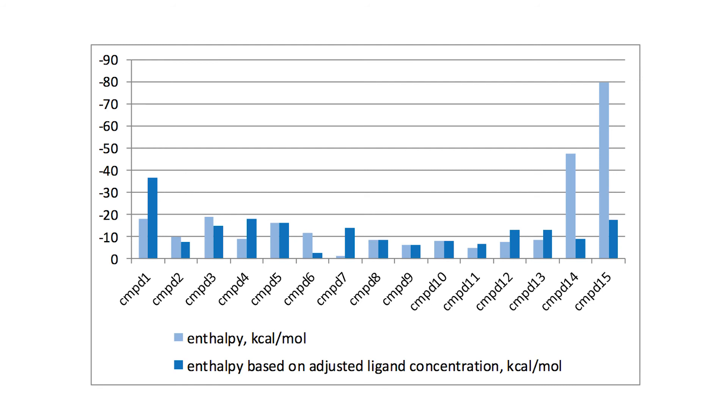This figure shows a comparison of the enthalpy data returned for the interaction of a series of low molecular weight hits with a target protein in a drug discovery program, with and without the correction for ligand concentration. The compounds are listed in order of descending affinity. Notice the discrepancies introduced when errors in ligand concentration are not accounted for.